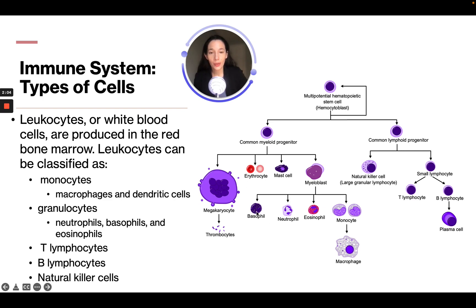Looking at a cell type chart, we have our granulocytes — basophils, neutrophils, and eosinophils — as well as monocytes, which make the macrophages. We also have the natural killer cells, our T cells and B cells.